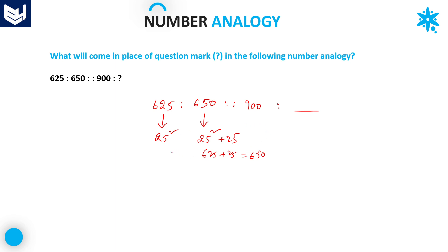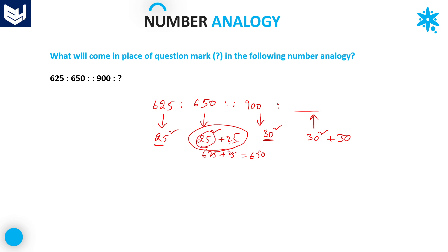So you can apply the same logic for the next one also. This value 900 is 30 squared. So you can apply the similar logic for this one also. We have taken 25 squared plus 25 because the first number is 25. In the similar fashion, here the first number is 30, so 30 squared. For this number you have to add 30. Because we are taking the square of 30, so you add 30 to this number. 30 squared is equal to 900.